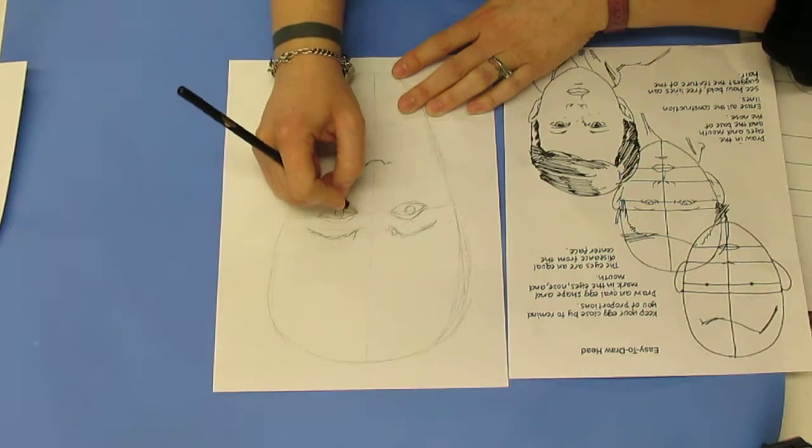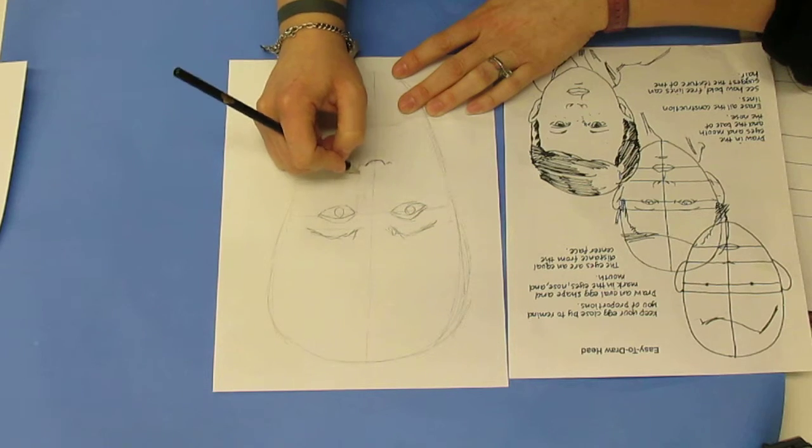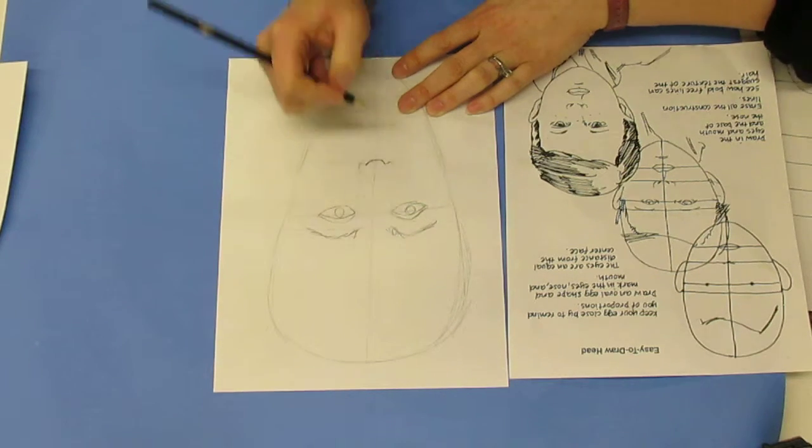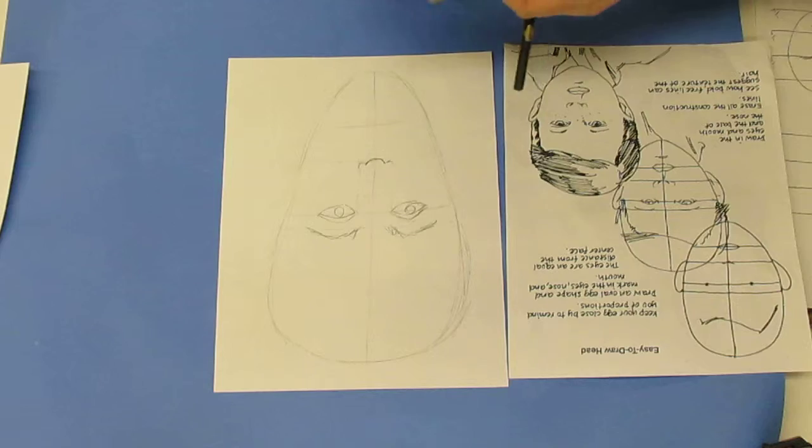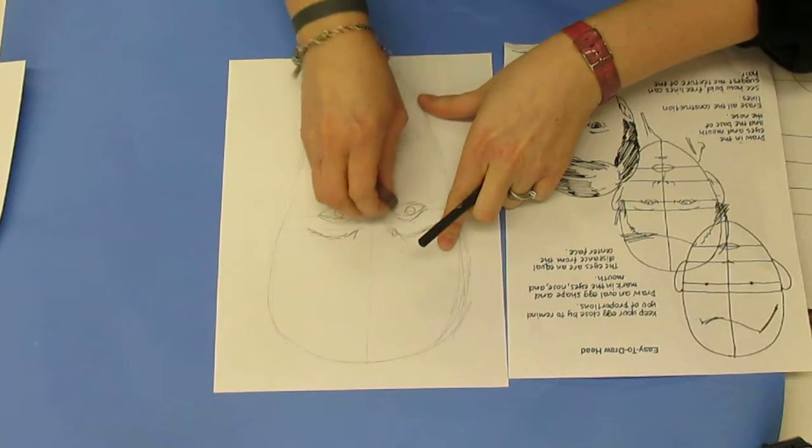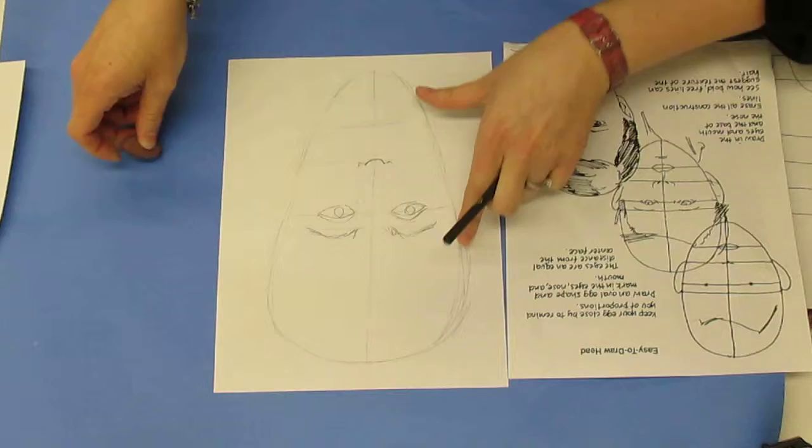A good tip: if you have an imaginary line from your eye going down, that's about how wide your nostrils generally are. I'll erase that because I don't want that there.